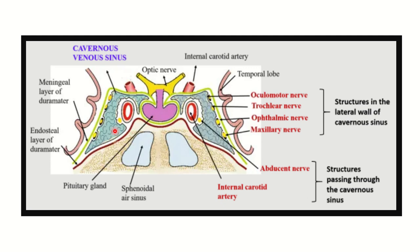Now let's see the different structures located in the cavernous sinus. Some structures are located in the lateral wall and some are located within the cavernous sinus itself. In the lateral wall: first is the oculomotor nerve, the third cranial nerve; second is the trochlear nerve, the fourth cranial nerve; third is the ophthalmic nerve, the first branch of the trigeminal nerve; and fourth is the maxillary nerve, the second branch of the trigeminal nerve.